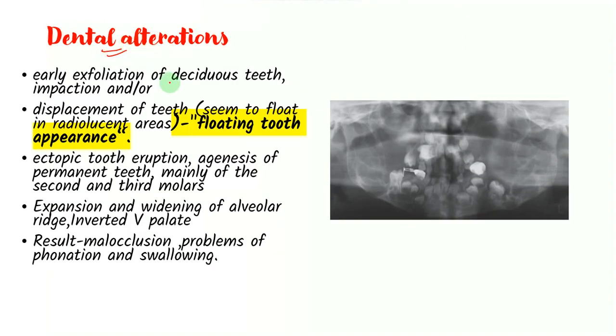So in the dental alterations, this is quite interesting. You have early exfoliation of deciduous teeth and impaction or displacement of the teeth. So look at this diagram carefully. You will see that these teeth appear to be displaced and they appear to be displaced into radiolucencies. You see multiple cystic radiolucencies in the jaw, they seem to be present in this, and this is called the floating tooth appearance. The second thing is that it causes agenesis of certain permanent teeth, especially the second and third molars. You have already studied that in maxilla it might lead to an inverted V palate. And the fourth thing is all of these can lead to malocclusion, problems in phonation and swallowing. So remember the floating tooth syndrome where the teeth seem to float in the radiolucent areas.